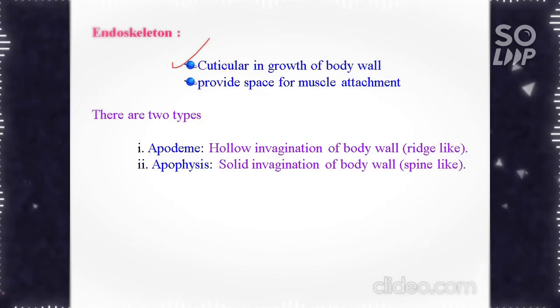The endoskeleton is a cuticular ingrowth of body wall that provides space for muscle attachments. There are two types: apodeme and apophysis. Apodeme is a hollow invagination of the body wall, or a ridge-like hollow invagination of body wall.